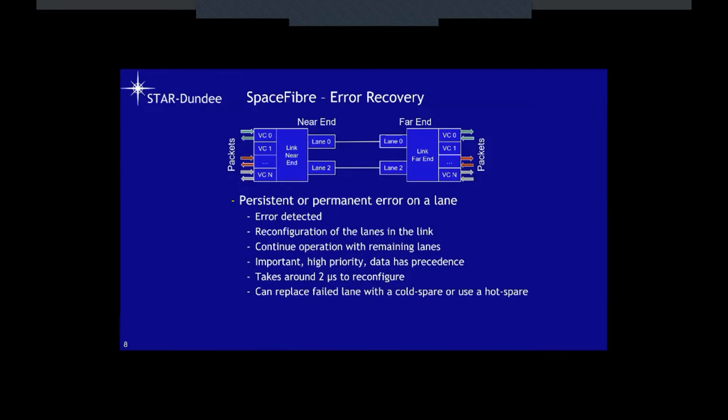We can also add cold spares or hot redundant lanes — not normally active, but a hot spare is active without sending data. They can be switched in when an error occurs so that you don't lose any bandwidth for the link.